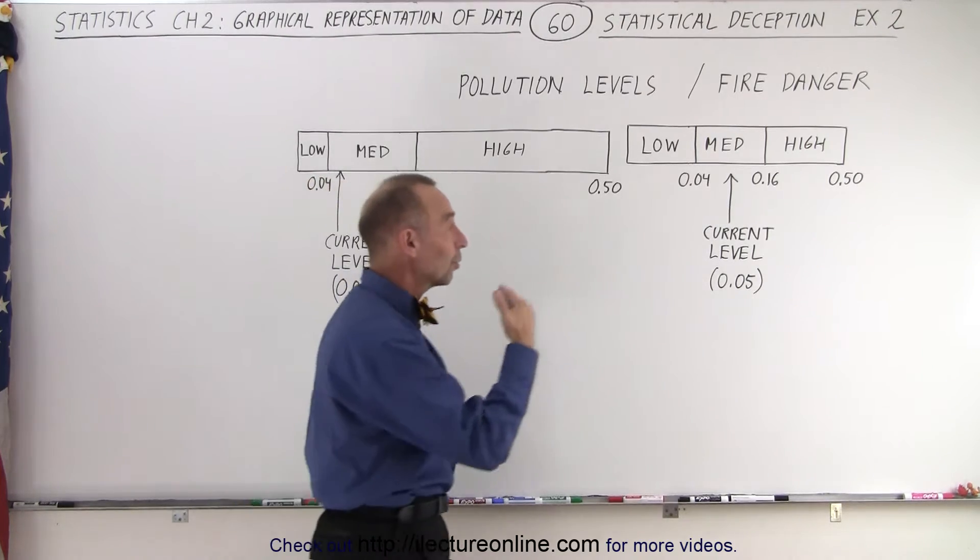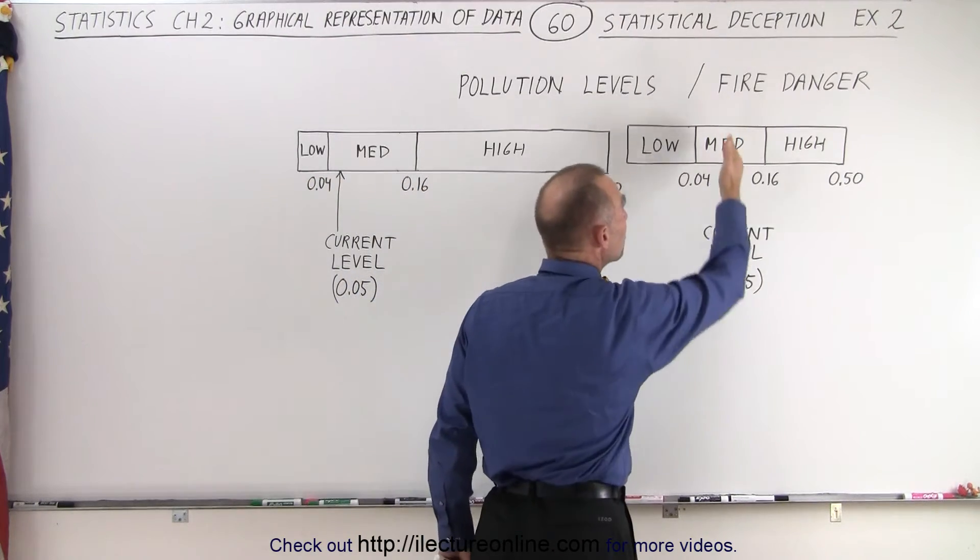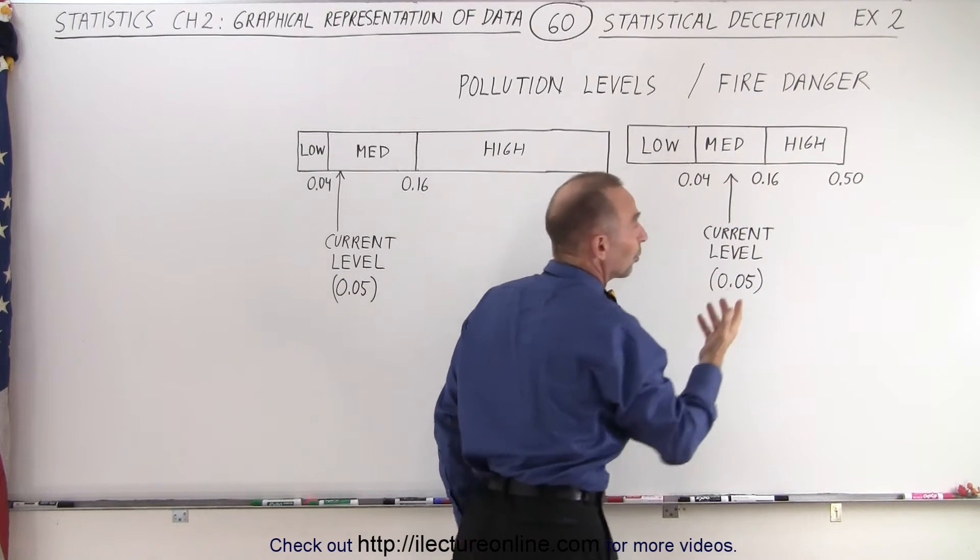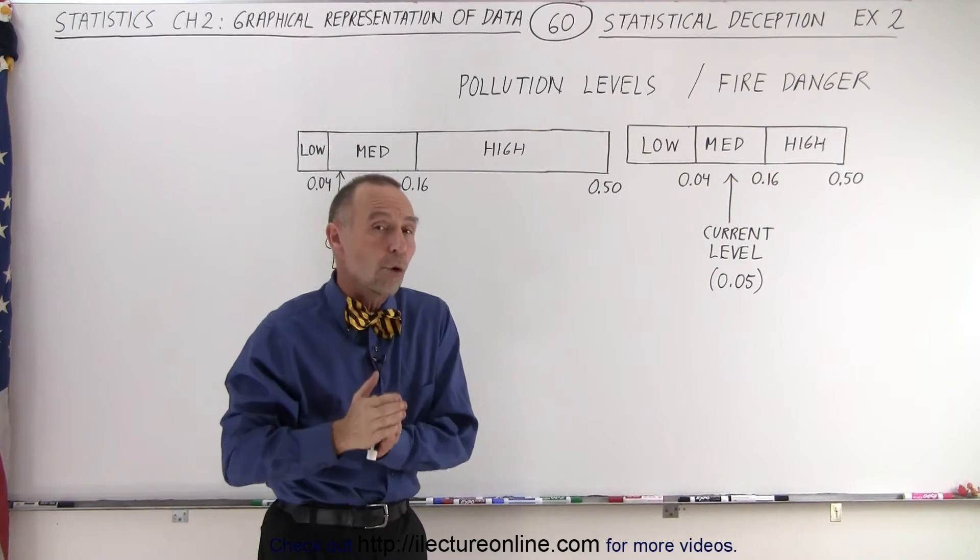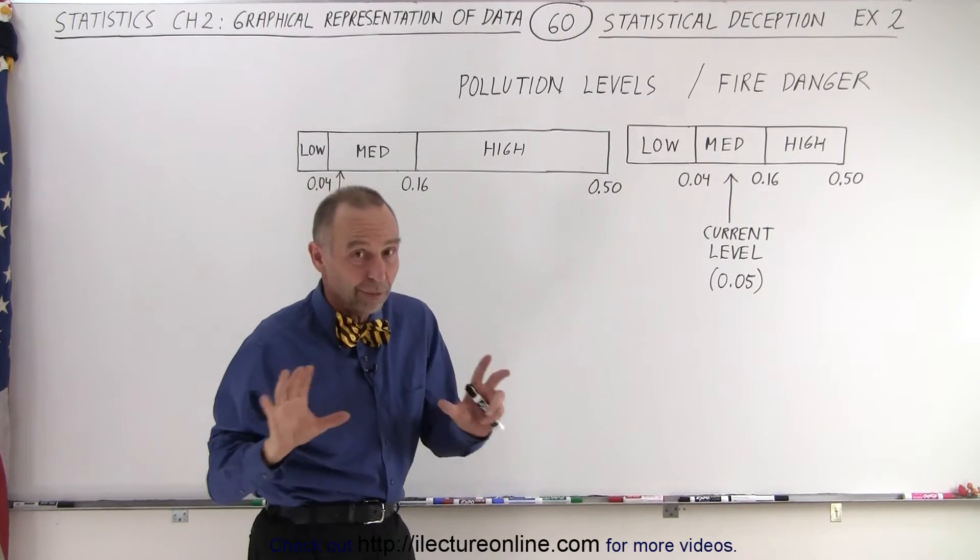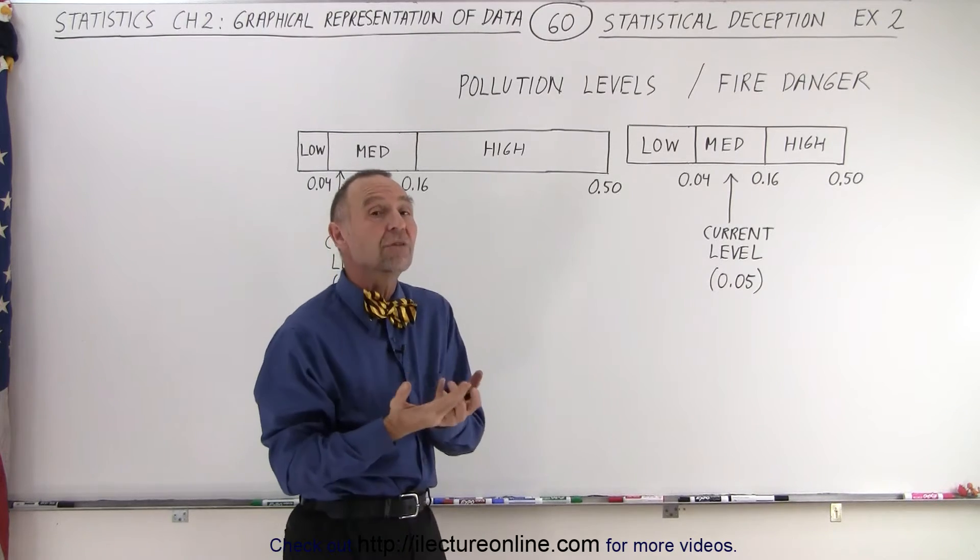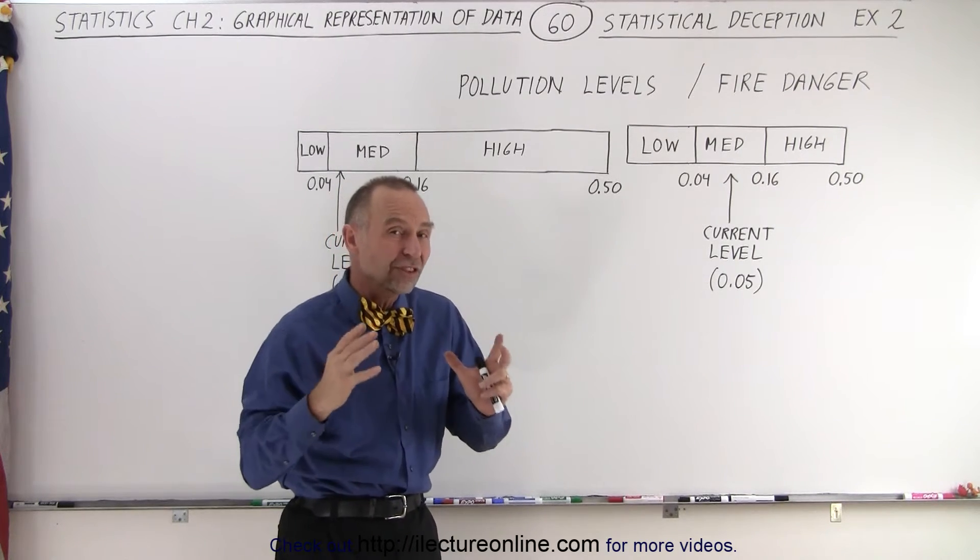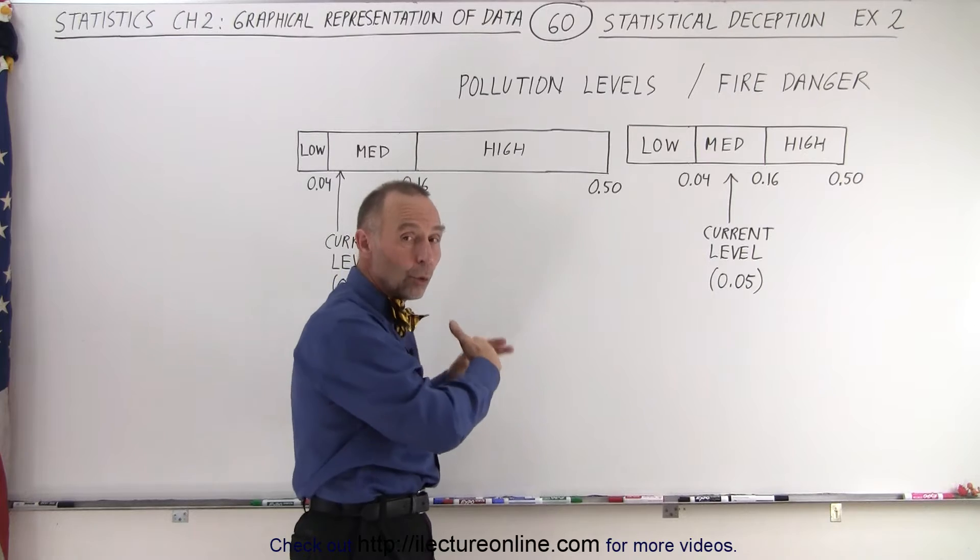Secondly, the current level only points to the middle of the medium box. In other words, it either wants to point to low, medium, or high, maybe for simplification, but it kind of misrepresents the true status of either the pollution level or the fire danger.